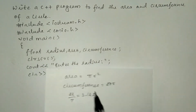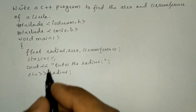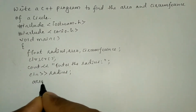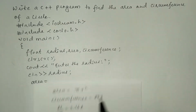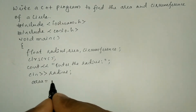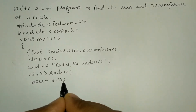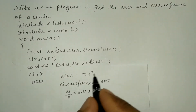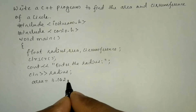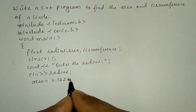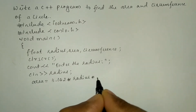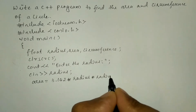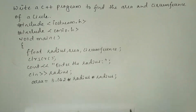After receiving the radius I need to calculate the area using the formula pi r squared. I am going to write: area = 3.142 * radius * radius. The asterisk symbol represents multiplication, so radius * radius gives r squared.